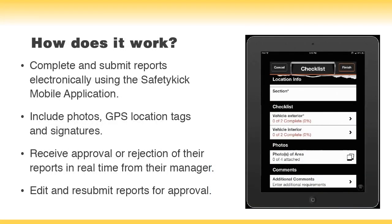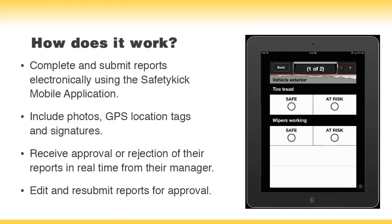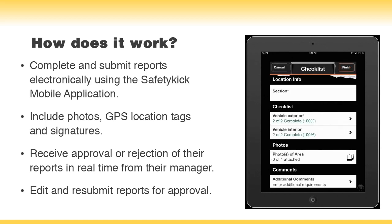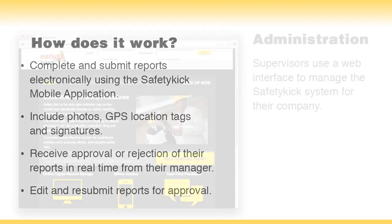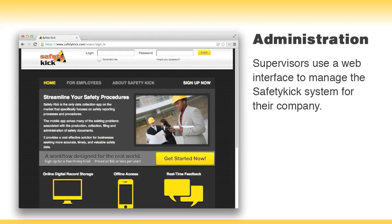Employees complete their company's customized reports on a mobile device and submit them for approval to their supervisor. Employees can then view a list of pending, approved, and rejected reports. A simple web interface allows supervisors to administer the Safety Kick system for their company.